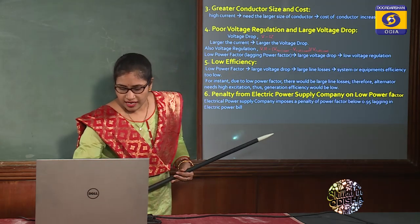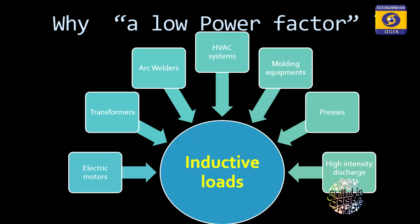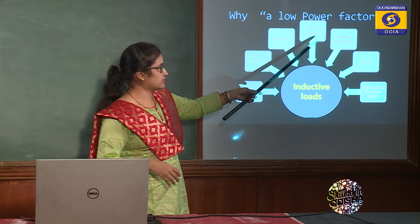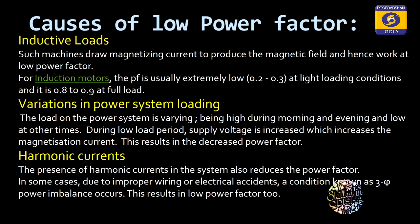The reason power factor becomes lower is inductive loads in the power system. These loads consume lagging current, which leads to a lower power factor. Inductive loads include a whole range of electric motors, transformers, arc welders, HVAC systems, molding equipment, presses, and high-intensity discharge lights. Basically, it is the inductive load that makes the power factor lower by consuming lagging current.